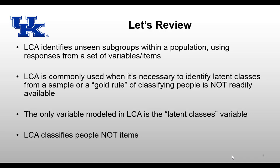Here is a brief summary of the theoretical review. First, LCA identifies unseen subgroups within a population using responses from a set of variables. LCA is commonly used when it is necessary to identify latent classes from a sample, or when a gold standard for classifying people is not readily available. The only variable modeled in LCA is the latent classes variable. Different from FA, LCA classifies people, not items.